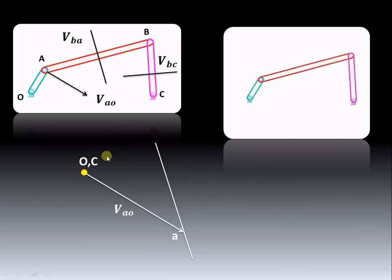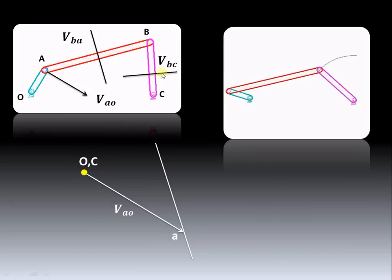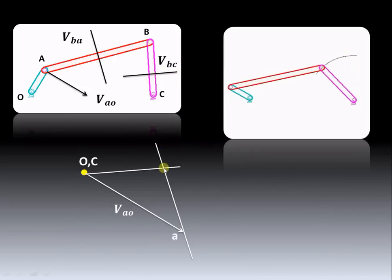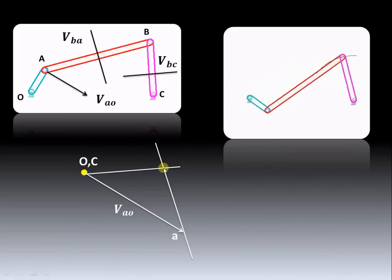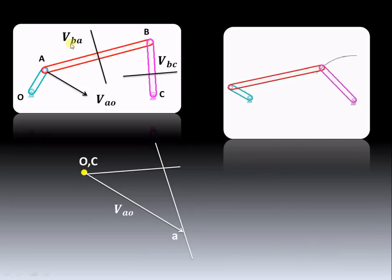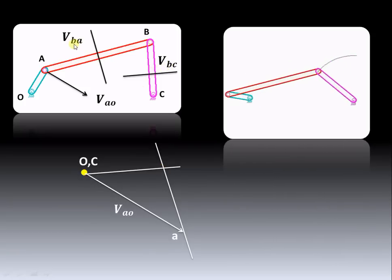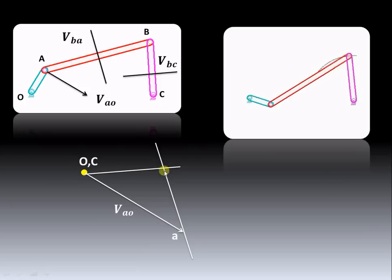The third vector is velocity of B with respect to C. Out of B and C, point C is known, so from point C draw a line perpendicular to link BC. These two lines intersect at a particular point, which is nothing but point B — because vectors V_BA and V_BC both have B as their common point, so the intersection is point B.